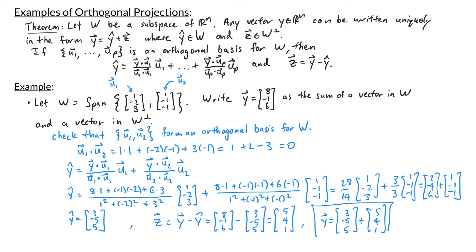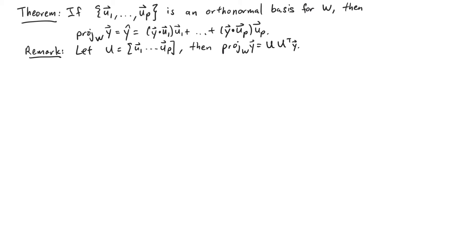One thing to note is that if we have an orthonormal basis for w, then finding the projection is even simpler. If u1 through up is an orthonormal basis for w, then the projection of y onto w, y-hat, is given by (y·u1)·u1 summed through (y·up)·up. Also, if U is the matrix with columns u1 through up, then the projection of y onto w can be calculated by U times U-transpose times y.